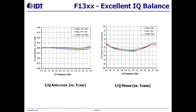The IDT-F30 series has excellent IQ balance: ±0.03 dB IQ amplitude error at room temperature, with only a small change even from minus 40 to 105 degrees C. IQ phase error is also excellent at ±1.5 degrees at room temperature, and remains stable from minus 40 to 105 degrees C.